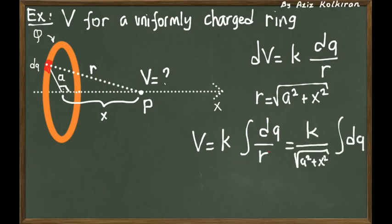So we can take r outside the integral and we are left with the integral of dq. But the integral of dq is nothing but the total charge, capital Q, on the ring. So the result is k times the total charge amount.